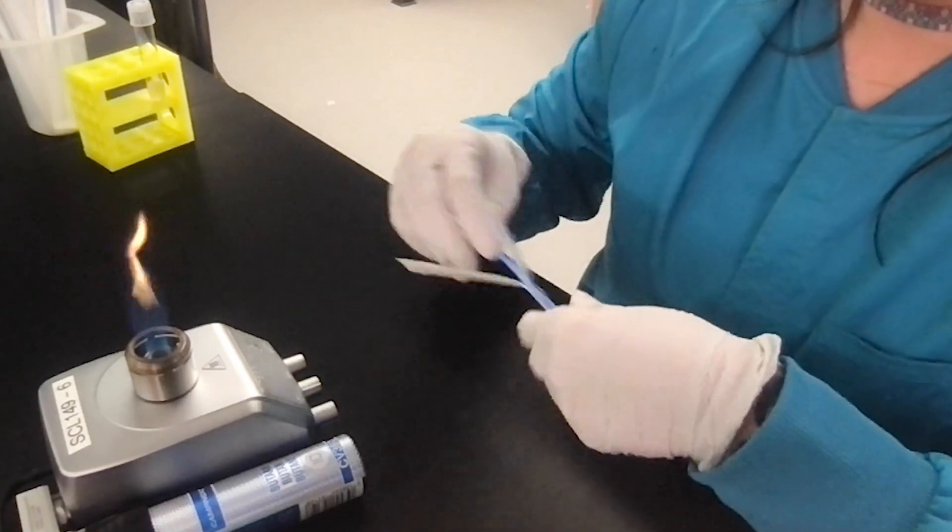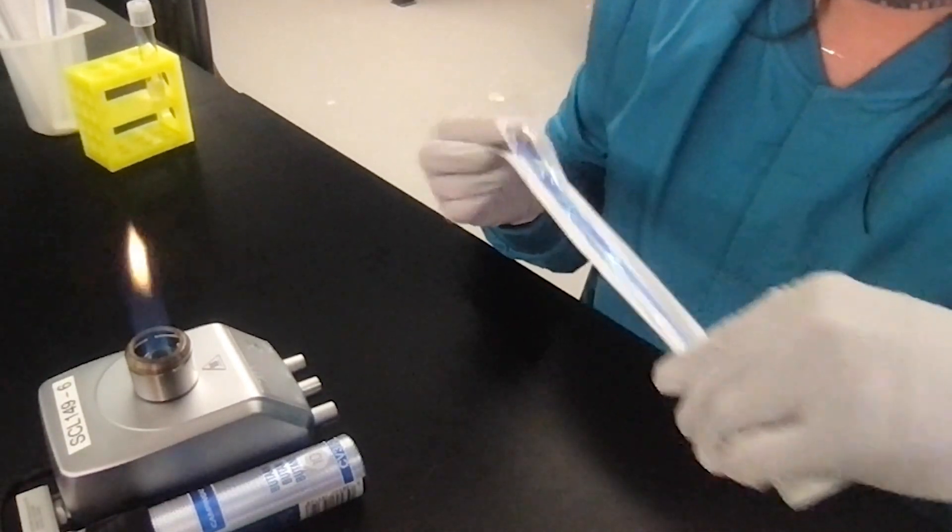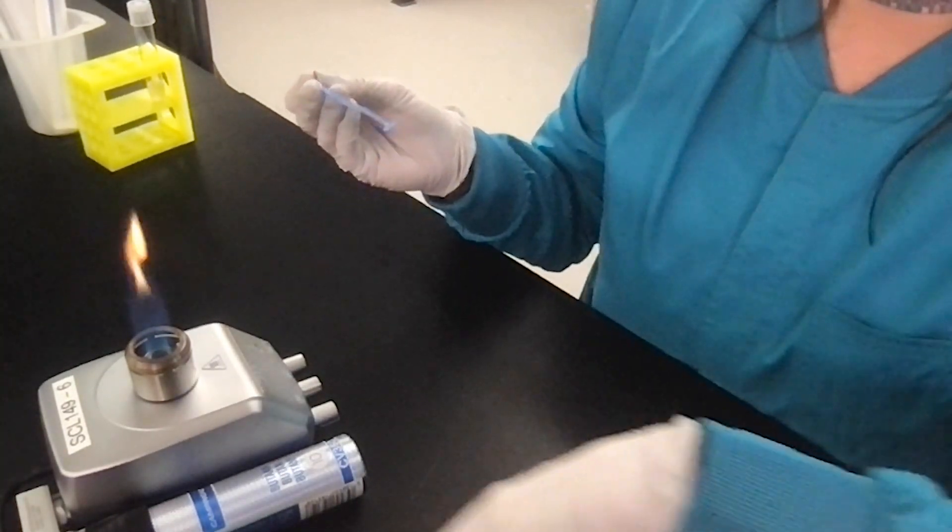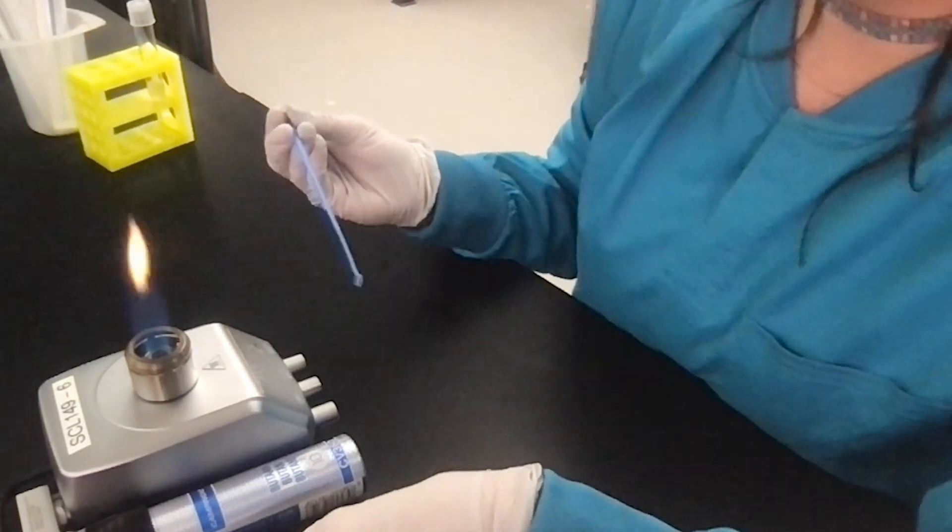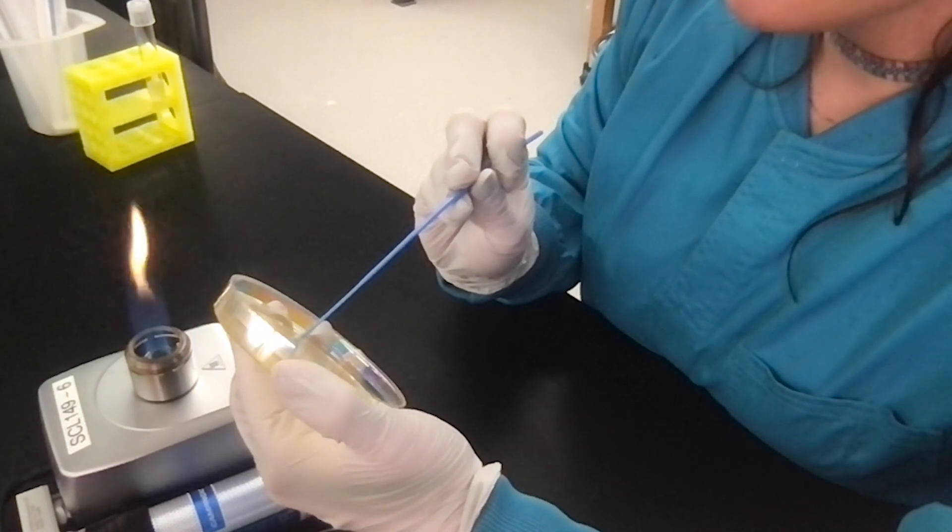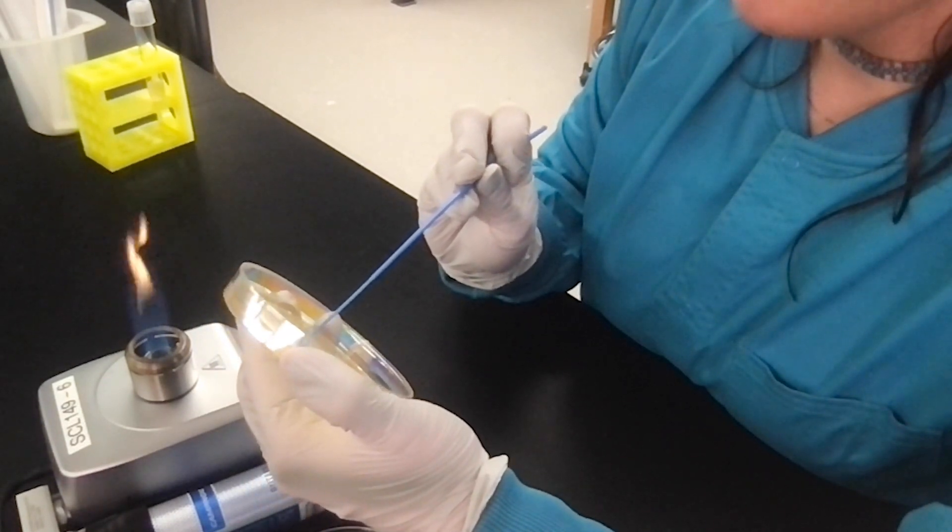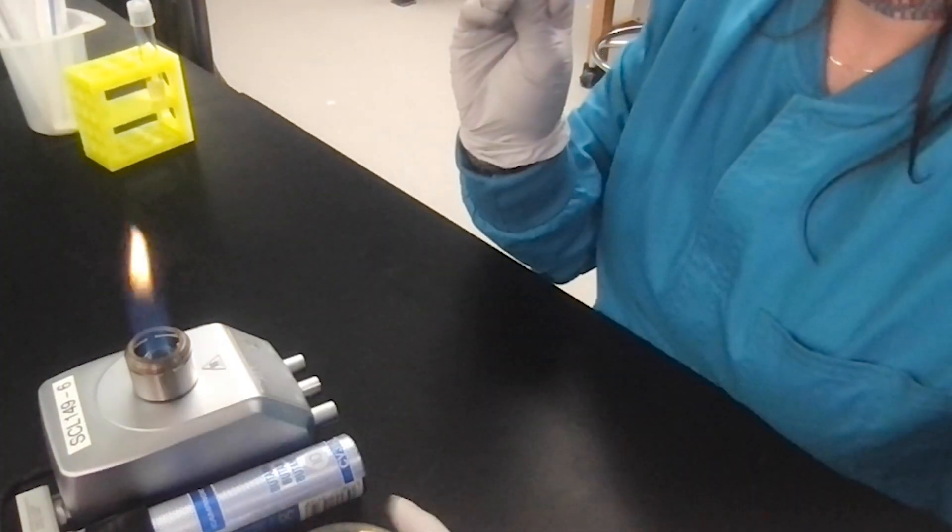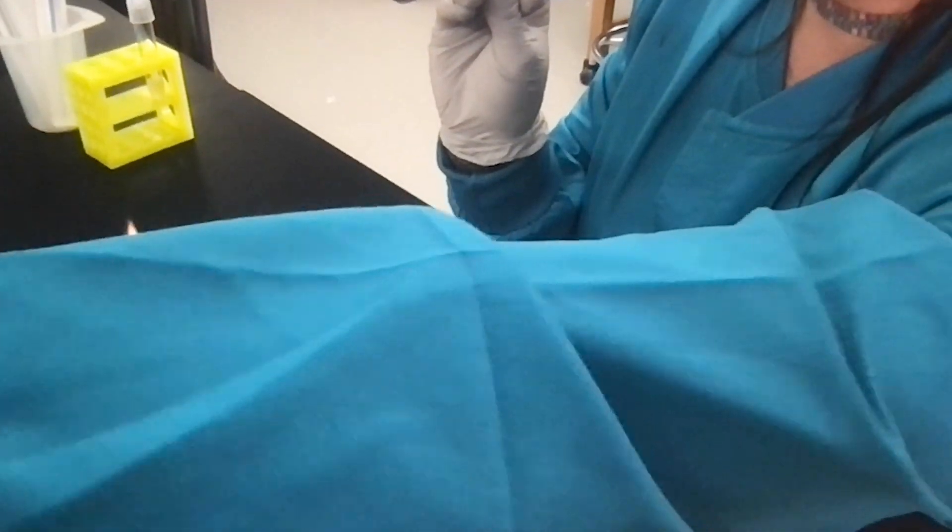I'm going to take my sterile inoculation loop, pull it out of its sterile packaging. Again, I'm going to work closely to my flame. I'm going to take my inoculation loop, and I'm going to scoop up a colony from this plate, and now I'm going to grab a fresh LB plate.